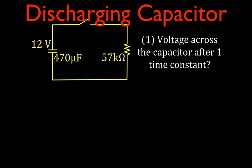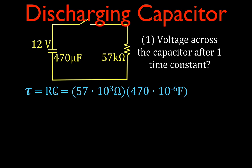The first thing is: what will the voltage across the capacitor be after one time constant? First, we have to figure out for this capacitor and resistor what the time constant will be. The time constant is simply RC — the resistance times the capacitance. So we multiply the resistance, 57k (57 × 10³) ohms, by the 470 micro (470 × 10⁻⁶) farad capacitor, and we get a time constant of 26.8 seconds.